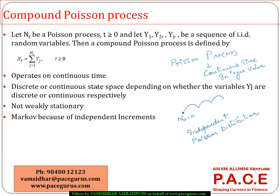Right from n(0) equal to 0, there are independent increments. The increment at n(t), after a certain point of time t, at what state it would be is completely independent. And it follows generally a Poisson distribution. So from here going to state 1, state 2, state 3, it follows a Poisson distribution. That is what we call a Poisson process.